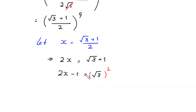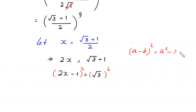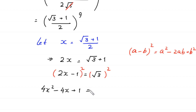From here we take the square of both sides. According to the algebraic identity, a minus b whole squared equals a squared minus 2ab plus b squared, this gives 2x minus 1 whole squared equals 4x squared minus 4x plus 1, which equals 3 (since the square cancels with the square root).